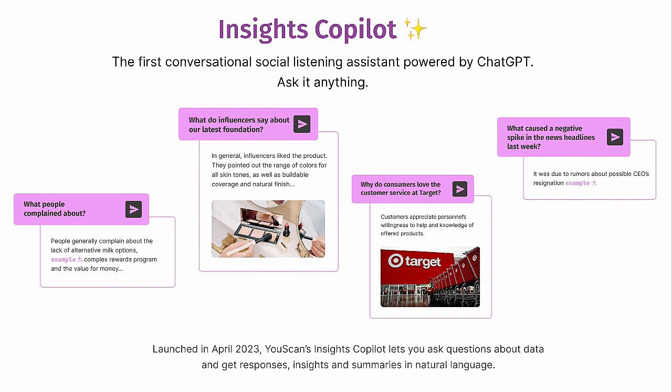We released Insights Copilot this April. It's a chatbot that lives within our platform's interface, has access to real-time social data that Uscan collects, and you can ask it anything in natural language about your social listening data. For example: what do people say about our new product? What do customers love about the competitor's customer service? What are the customer personas that mention a competitor's product on social media? I've recorded a screencast to show you how it actually works — let's get straight to the demo.